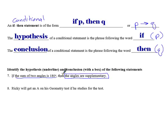Typically, you will see them in the form if something, then something else. If P, then Q. So this is kind of my P scenario. This is my Q scenario. But if you take a look at the next example, it says Ricky will get an A on his geometry test if he studies for the test.